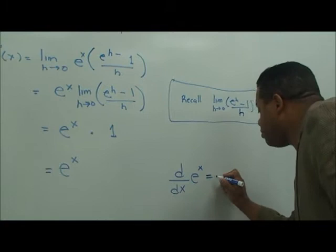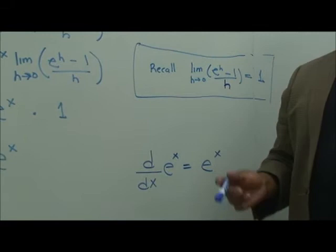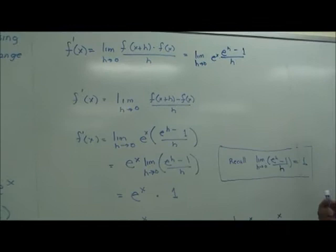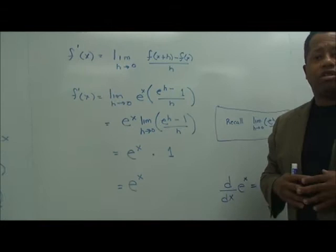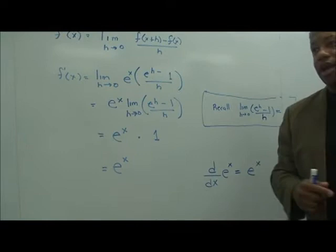So the derivative of e to the x with respect to x is still e to the x — this has now been derived. The derivative of e to the x is e to the x. Have your students repeat this. It's one of the basic derivative rules you can memorize, just like knowing that the derivative of a constant is zero. The derivative of e to the x is e to the x.